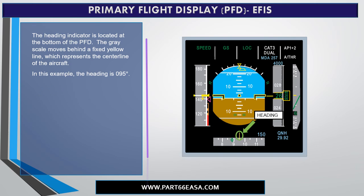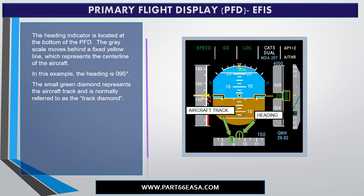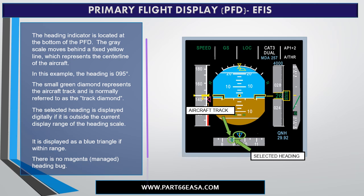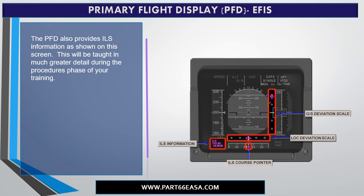The heading indicator is located at the bottom of the PFD. The gray scale moves behind a fixed yellow line which represents the centerline of the aircraft. In this example, the heading is 095 degrees. The small green diamond represents the aircraft track and is normally referred to as the track diamond. The selected heading is displayed digitally if it is outside the current display range of the heading scale, and as a blue triangle if within range. There is no magenta or managed heading bug. The PFD also provides ILS information, which will be taught in greater detail during the procedures phase of training.